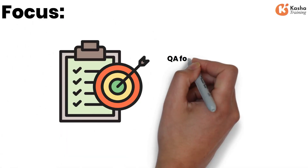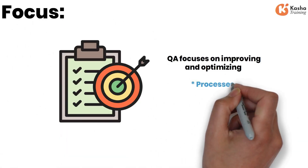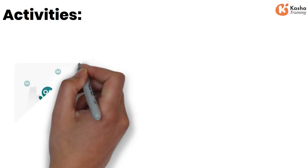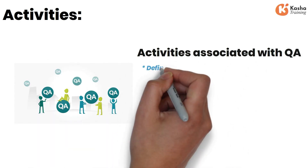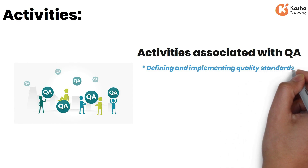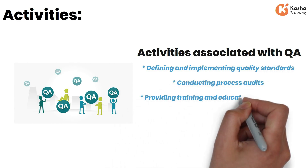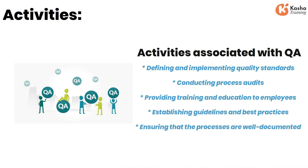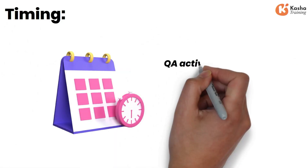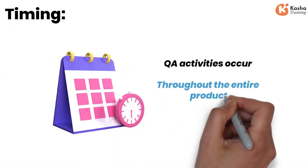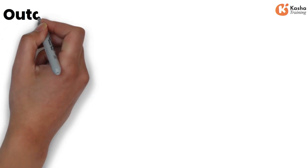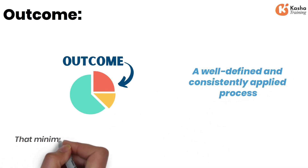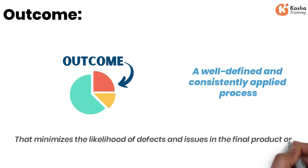Focus: QA focuses on improving and optimizing processes, procedures, and workflows to consistently meet quality standards. Activities: activities associated with QA include defining and implementing quality standards, conducting process audits, providing training and education to employees, establishing guidelines and best practices, and ensuring that the processes are well-documented. Timing: QA activities occur throughout the entire product or service development lifecycle. Outcome: the outcome of QA is a well-defined and consistently applied process that minimizes the likelihood of defects and issues in the final product or service.